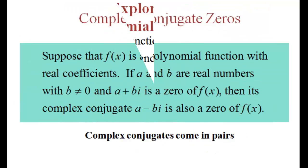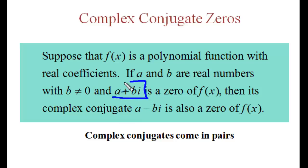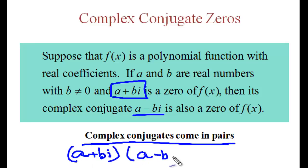We'll talk a little bit about complex conjugate zeros. If we have a complex conjugate, which is something in this form, a plus bi, if that is a zero, then a minus bi is also a zero. Complex conjugates come in pairs. If we have a plus bi, we'll also have a minus bi as a zero.